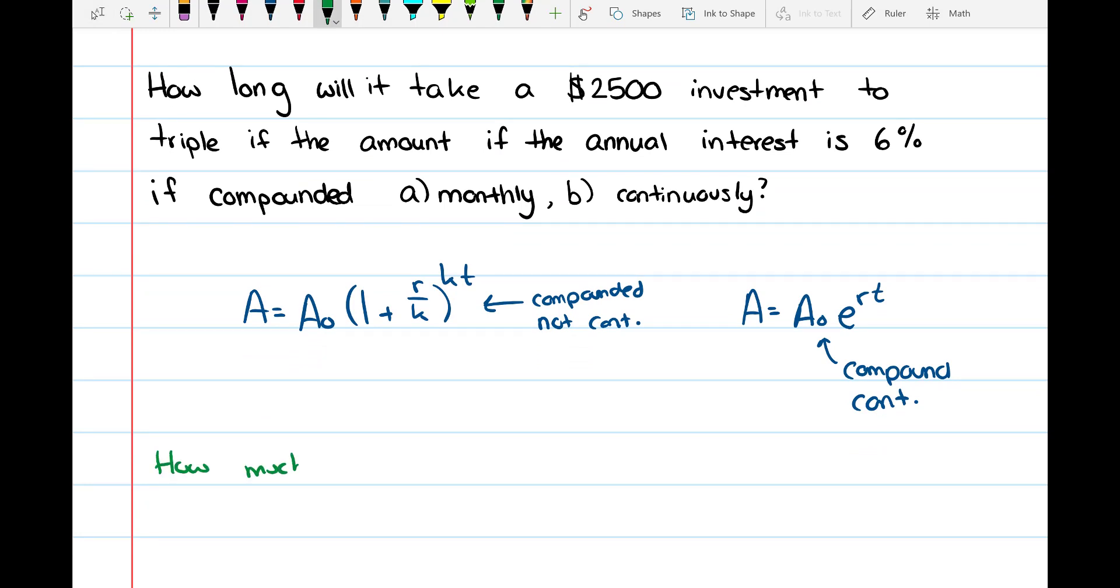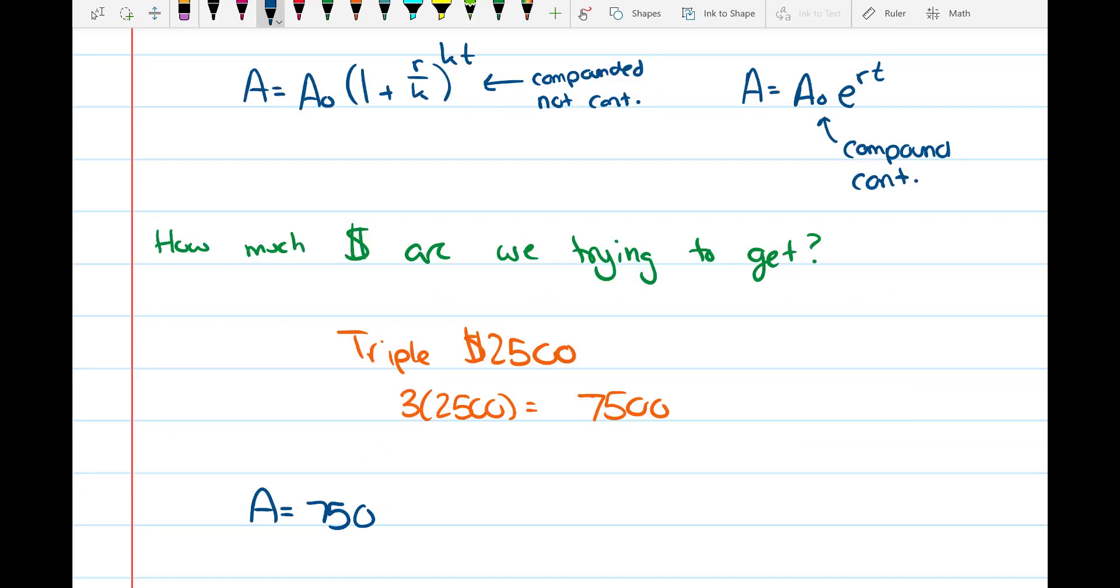It's also important to point out what we're trying to get with our final A value - how much money are we trying to get to - and our A₀ value, the original amount invested, this $2500. And then for part a, we're gonna compound monthly, and so k is going to equal 12.